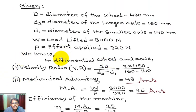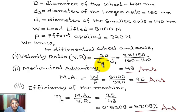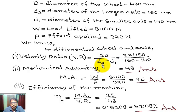We know in differential wheel and axle, velocity ratio VR equals 2·capital D divided by (d2 minus d1), where capital D is diameter of the wheel, small d2 is diameter of the larger axle, and small d1 is diameter of the smaller axle.